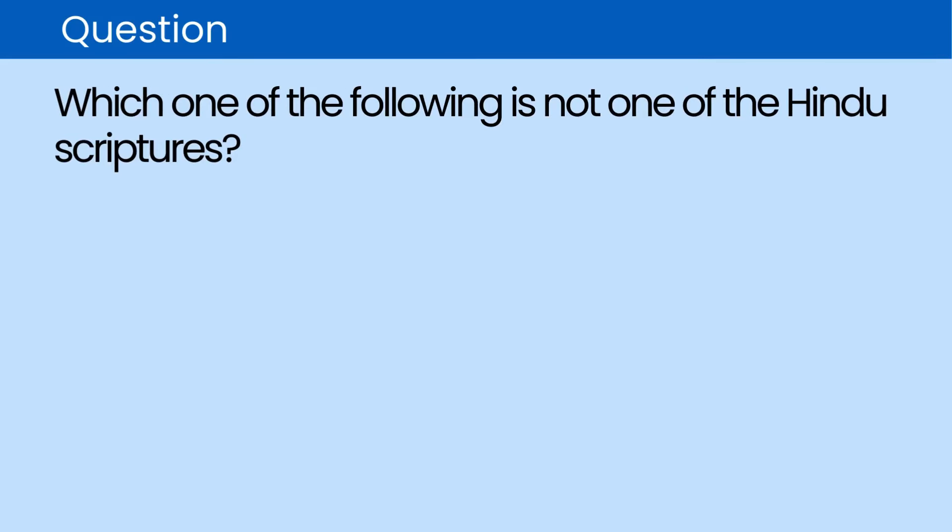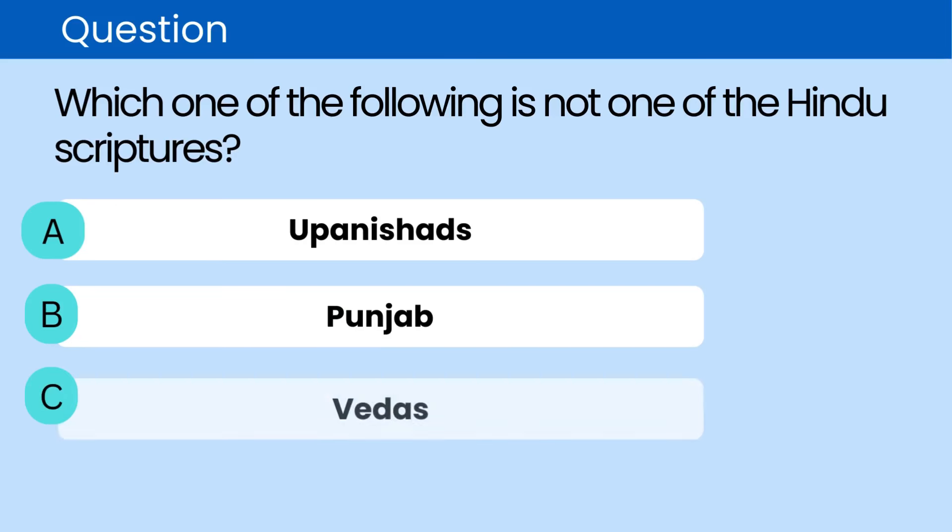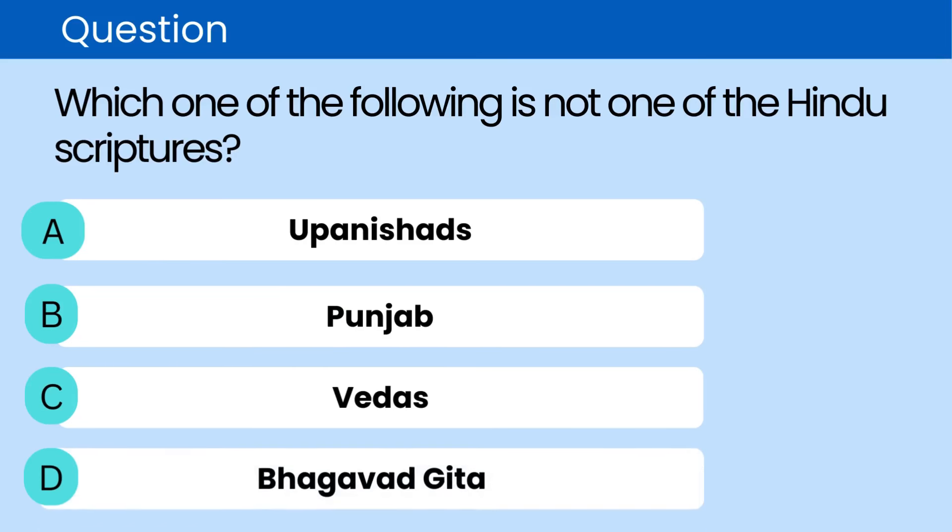Question: Which one of the following is not one of the Hindu scriptures? A. Upanishads. B. Punjab. C. Vedas. D. Bhagavad Gita. The correct answer is B. Punjab.